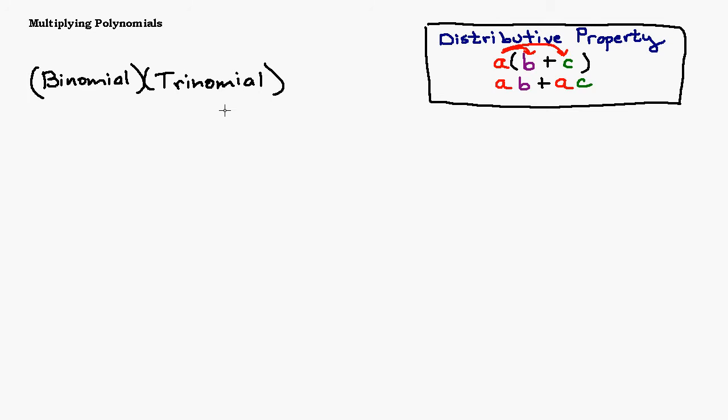In another video I did, we covered multiplying a binomial times a binomial, which is a very special type of multiplying. It has a special name called FOIL: First, Outside, Inside, Last.